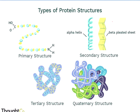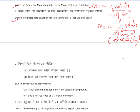Next question: explain why transition elements generally form colored compounds. It is because of the presence of unpaired electrons. In transition elements, due to d-d transitions, they have unpaired electrons. They absorb some radiation from the visible light region and excite electrons to upper levels, and naturally they show color. If they form compounds with other ions or molecules, they will form color. The reason is the presence of unpaired electrons.